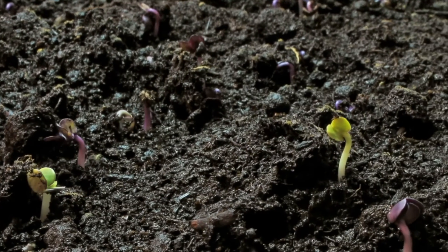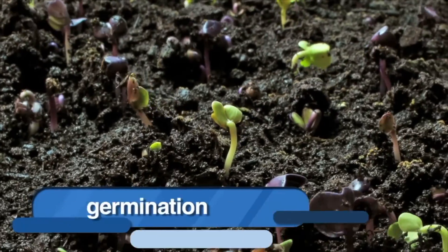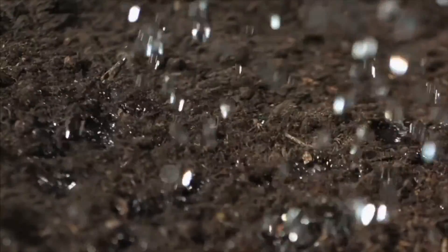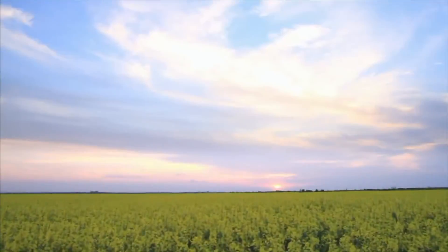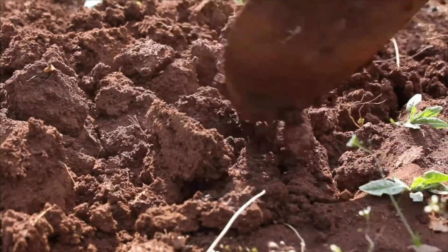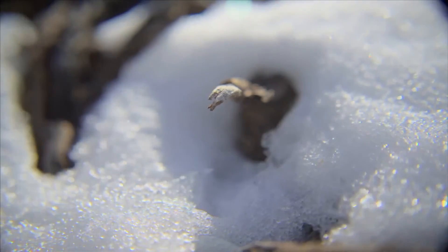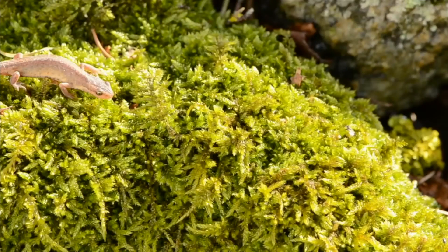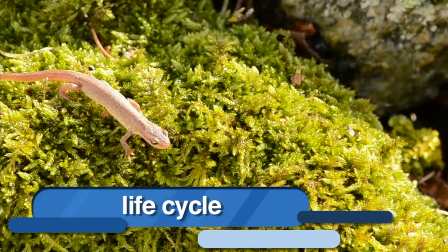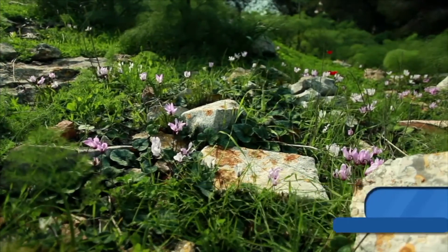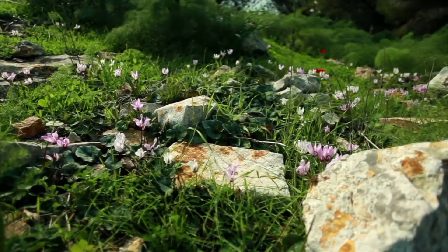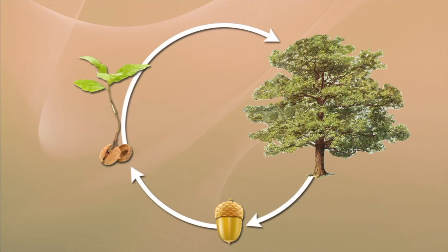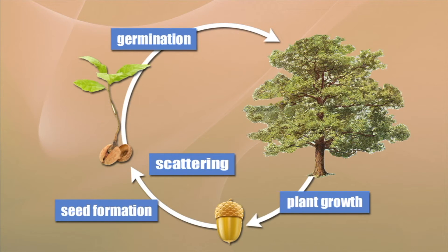When a plant embryo begins to grow, we say that the plant is germinating. Germination is the beginning of the growth of a plant embryo. Germination depends upon the right amount of water, the right temperature, and enough oxygen. Many seeds germinate in the spring because the temperature of the ground and air are warmer. Plants, just like other living things, have a life cycle. Some plant life cycles can be completed in one year; some plants take longer. But no matter how long a plant's life cycle, all seed plants go through the following cycle: germination, plant growth, seed formation, and scattering.